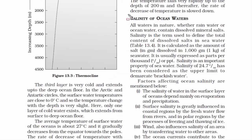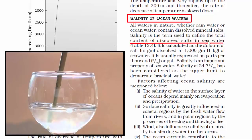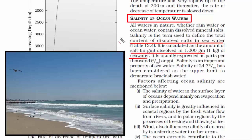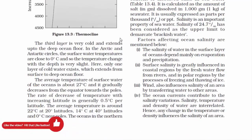Let's look at the salinity of ocean waters. Salinity means the amount of dissolved salt in water. It is calculated as the amount of salt in grams dissolved in 1,000 grams — that is 1 kg — of seawater. Salinity is an important property of seawater. Let's look at the factors affecting ocean salinity.